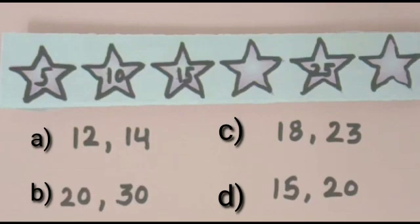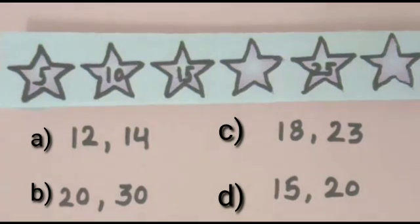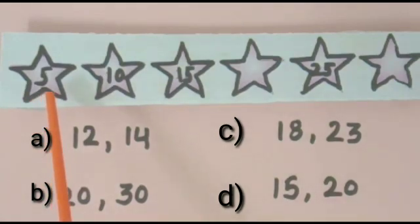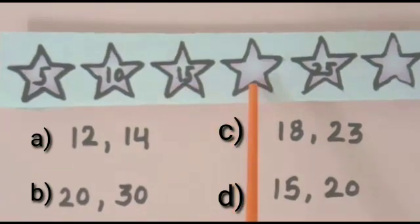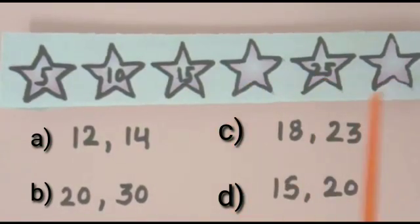Now it is time for today's question. Our today's question is fill in the blanks. So here 5, 10, 15, fill up, 25, and then again fill up. And from the given options we will fill the appropriate number in it. Option A is 12, 14. Option B is 20, 30. Option C is 18, 23. And option D is 15, 20.